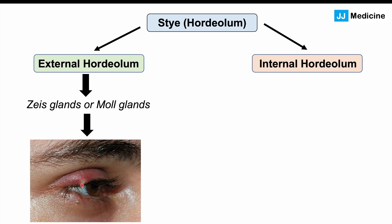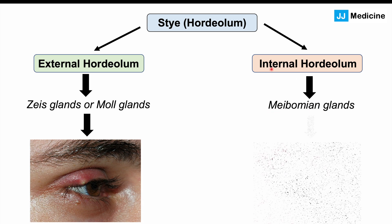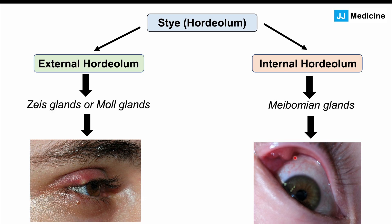With the internal hordiolum, we have issues with meibomian glands. A helpful mnemonic: meibomian — 'M' for internal. This is what an internal hordiolum looks like — you actually have to lift the eyelid to see it, revealing a big bump on the inside of the eyelid. You don't see this bump on the outside; there may be some swelling or redness externally, but the bump itself is hidden.